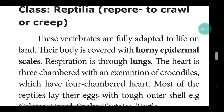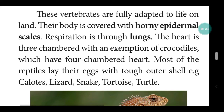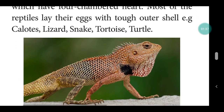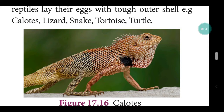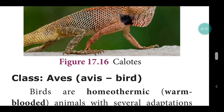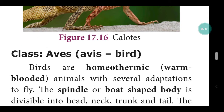The heart is three-chambered, with the exception of crocodiles. Except the crocodile, all reptiles have three chambers. Crocodiles have a four-chambered heart. Most reptiles lay eggs with a tough outer shell — for example, tortoise and turtle are examples of reptiles.